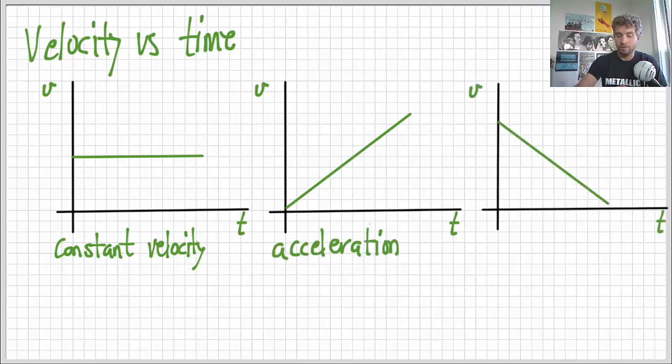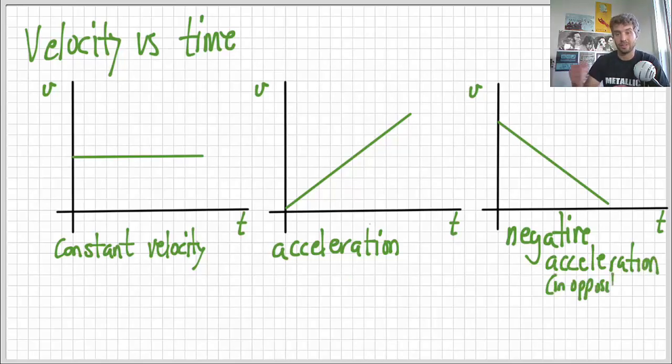And if the line is going down, then we are, you might say it's decelerating, but more accurately, it's negative acceleration. So, it's accelerating in the opposite direction as this one was. So, if this is speeding up, then that could be slowing down, but it could also be speeding up in the other direction. So, that's why we don't just say deceleration or just slowing down. It's acceleration in the opposite direction.